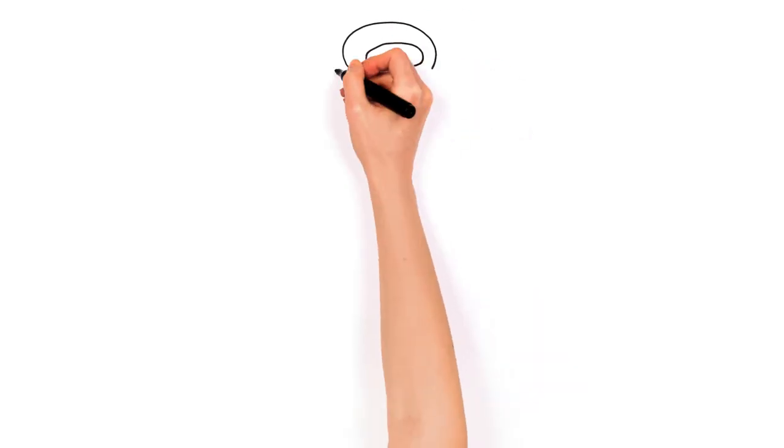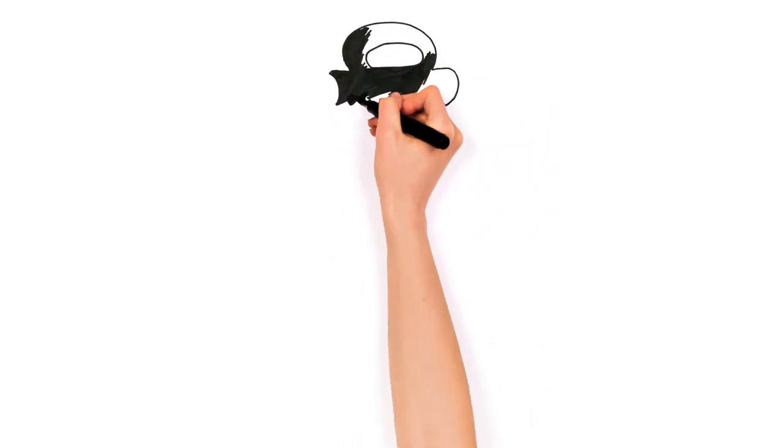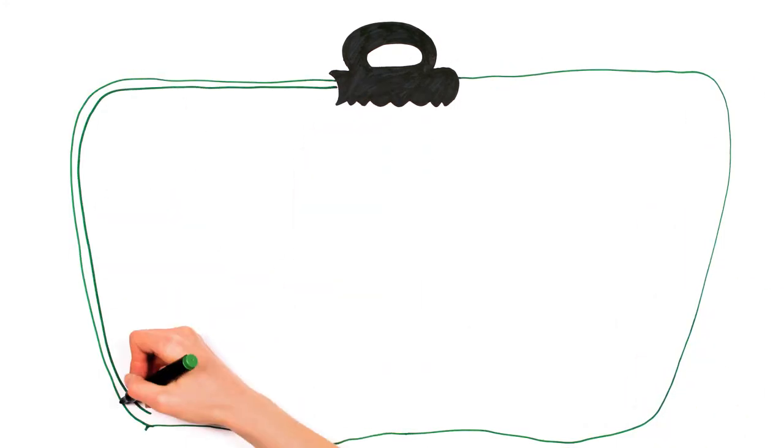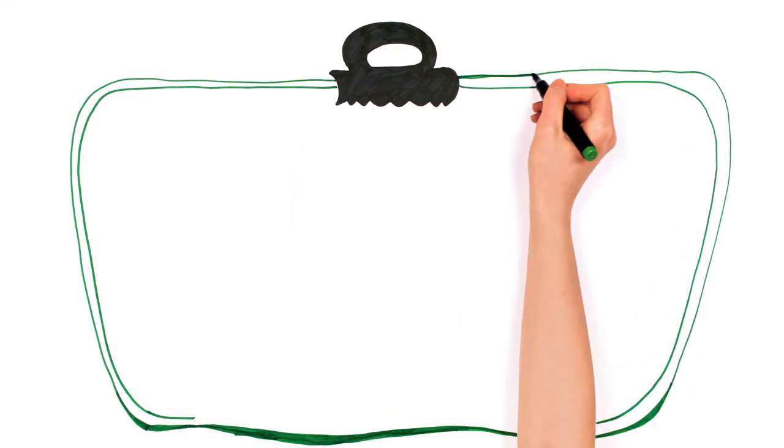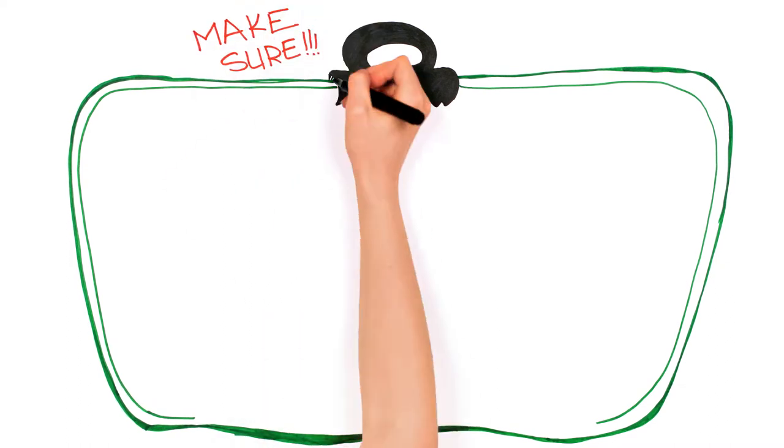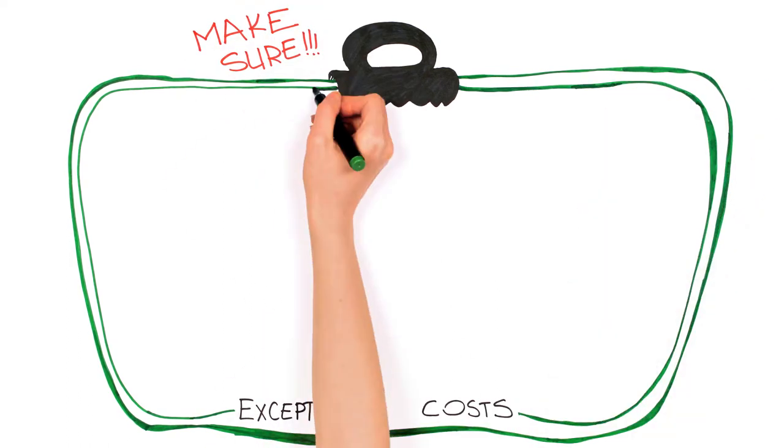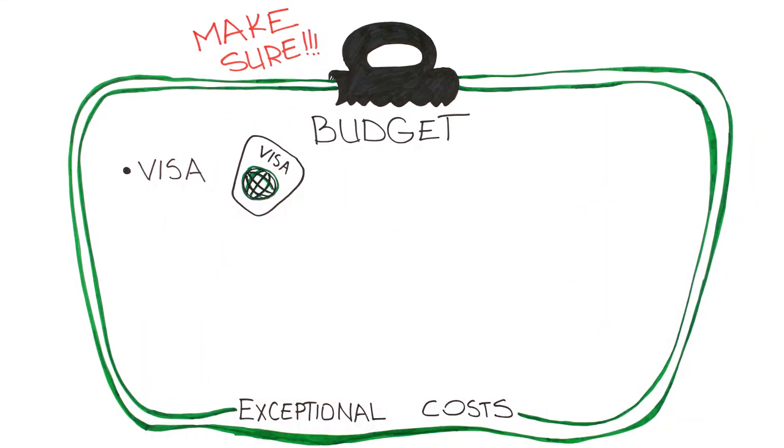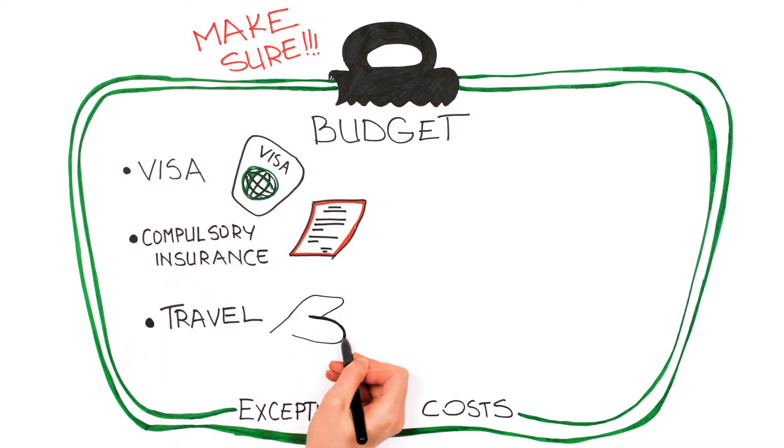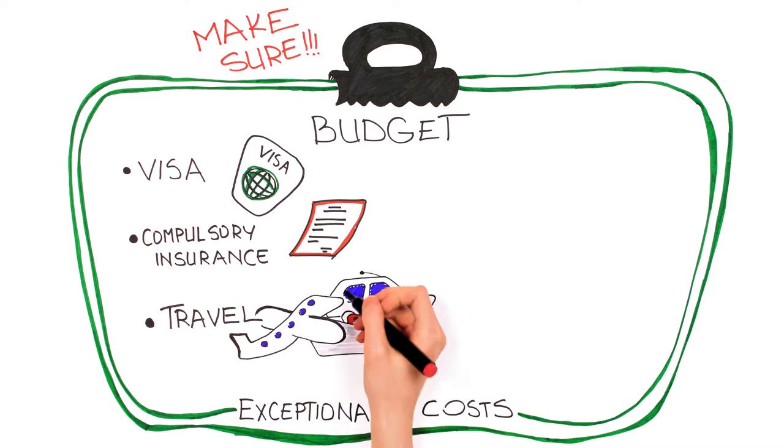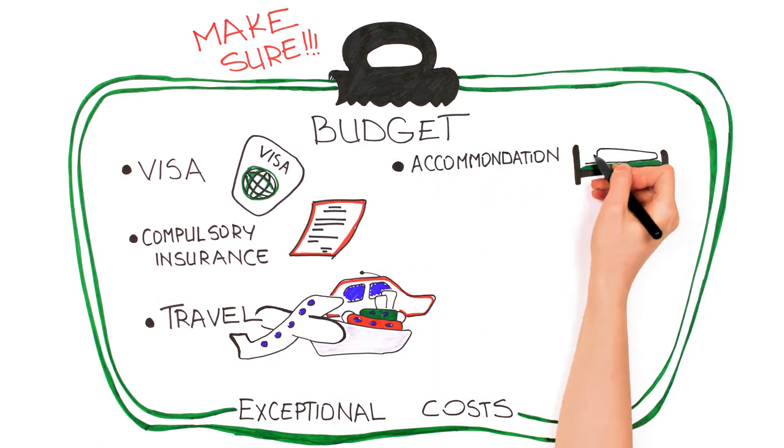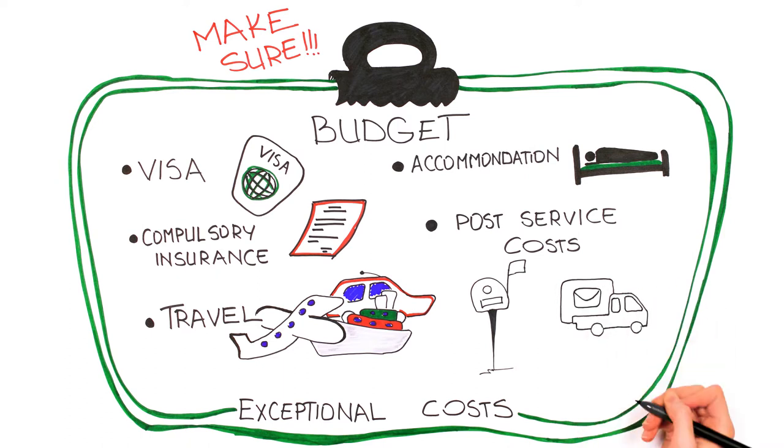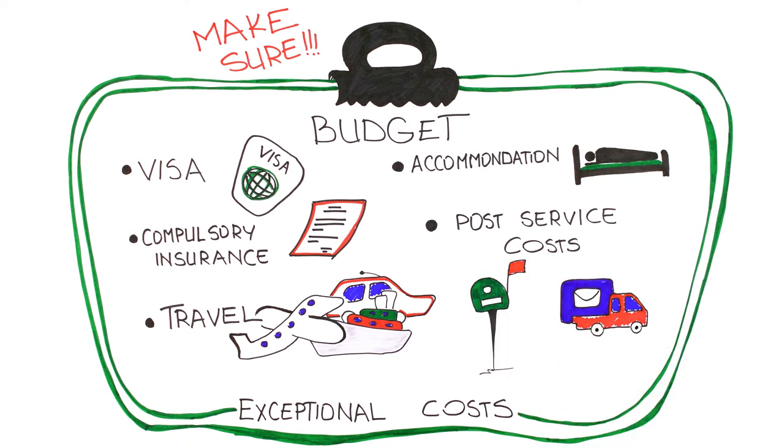If a youth exchange project involves citizens both from EU and non-EU countries, in most cases, they would need a visa to enter either an EU or non-EU country. Make sure visa-related costs are identified by all partners and included in the budget as exceptional costs. Visa-related costs are not only visa fees but also compulsory insurance, travel, accommodation, post-service costs for applying and receiving a visa for the advanced planning visit and youth exchange.